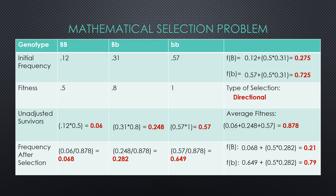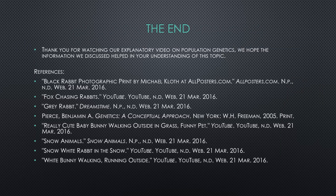You should now have a better understanding of the different types of natural selection, how these types of selection alter allele and genotypic frequencies within a population based on the fitness value of heritable traits, and how the frequency after selection can be calculated. Thanks for watching.